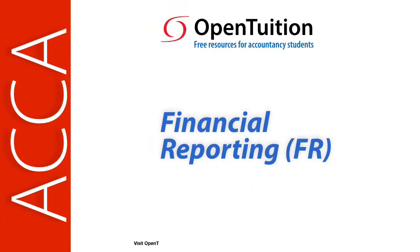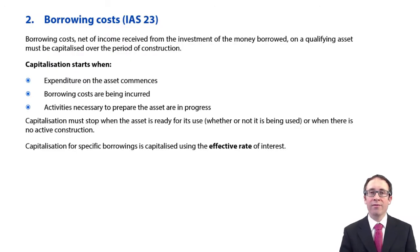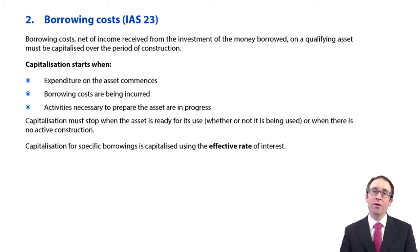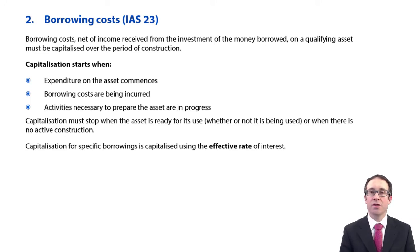This is a lecture from OpenTuition. To benefit from the lecture, you should download the free lecture notes from OpenTuition.com. Let's go through and have a look at another accounting standard related to our non-current assets. Following on from Property, Plants and Equipment and IAS 16, we're now going to look at how to treat borrowing costs under IAS 23.